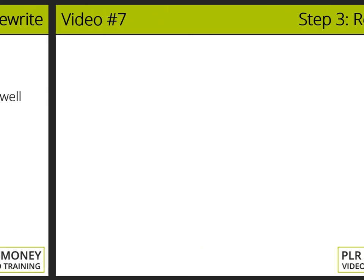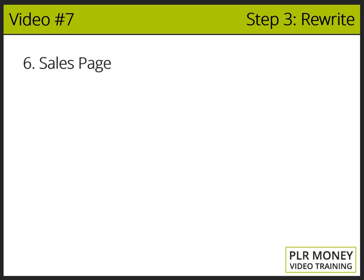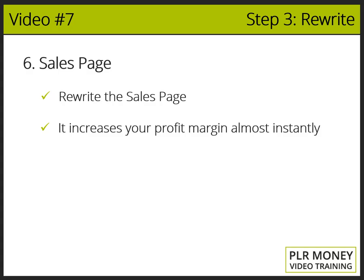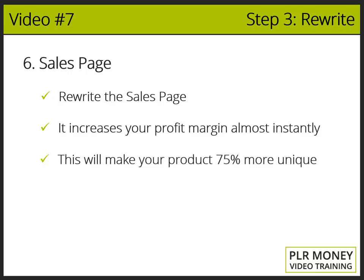Sales page: something very important is to rewrite the sales page, which will make your visitors buy your product. The first thing your prospects will see about your product will definitely be your sales page. With good sales copy you can increase your profit margin almost instantly. You can change the name of the product and many parts of the training, but if you don't change more than just the name on the sales page, it will hurt your conversions. This is something that will make your product 75% more unique and really stand out from the crowd.